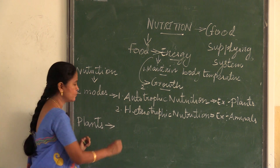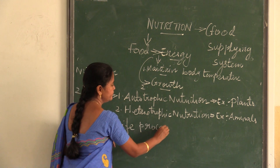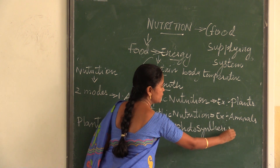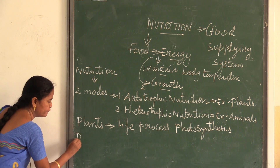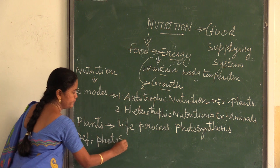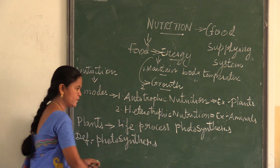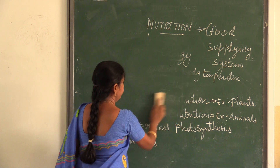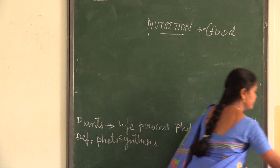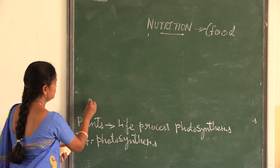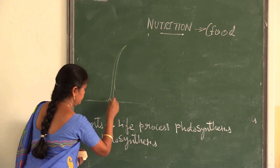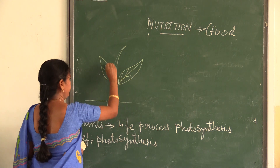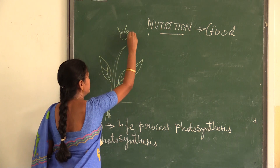For plants, we will look at a life process called photosynthesis. We will look at the definition of photosynthesis.